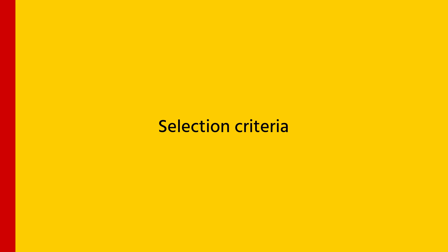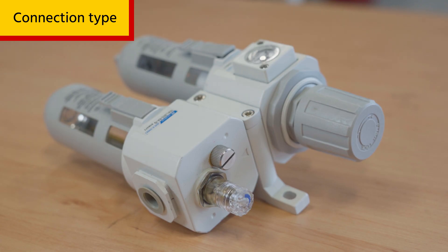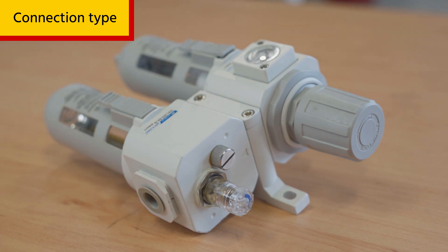First, ensure that the lubricant is rated for your application's operating pressure and temperature. Next, check the connection type of the lubricator you want — does it fit with your system? There are different brands with different connections, so make sure that your lubricator will fit your system.